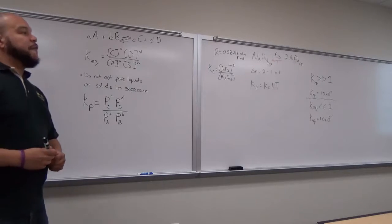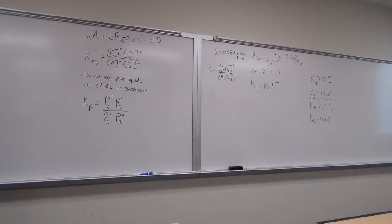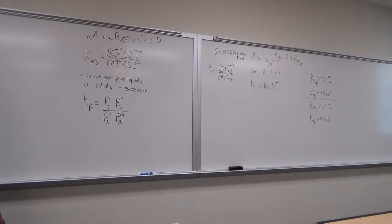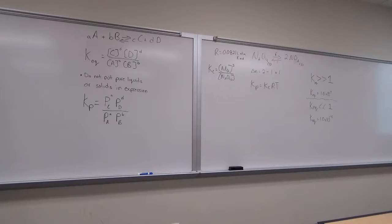If you multiply the chemical equation by a number and change the stoichiometry of the reaction, you would raise the original Kc to that number as an exponent. I don't use this very much, but it's something for you to know.